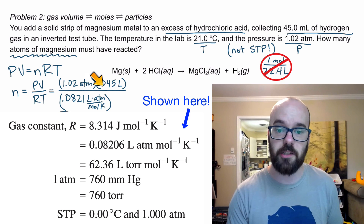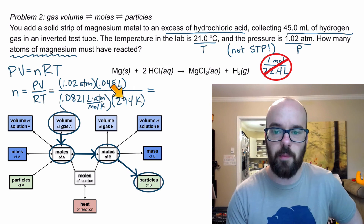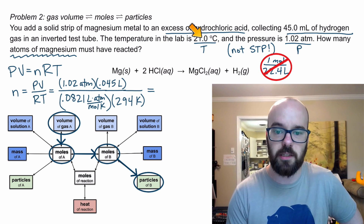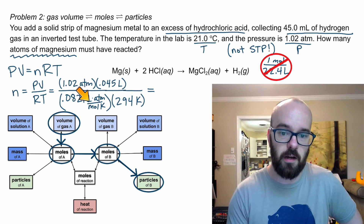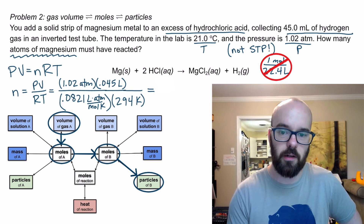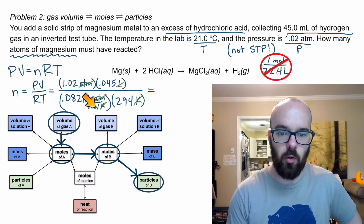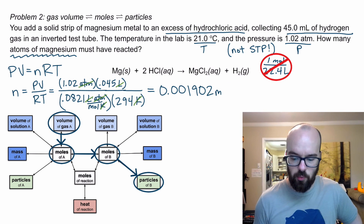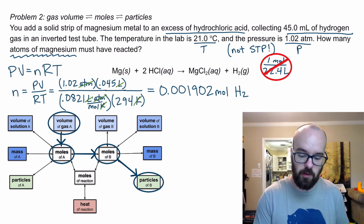My ideal gas law is set up. Substituting those numbers into the calculator, the units cancel and I'm left with moles. I get 0.001902 moles of hydrogen gas. I've now converted the gas volume to moles of hydrogen.